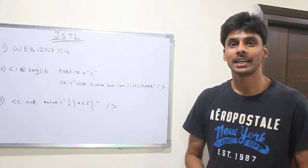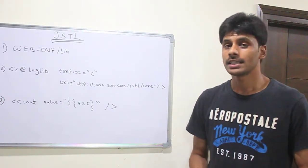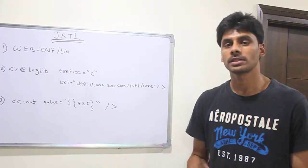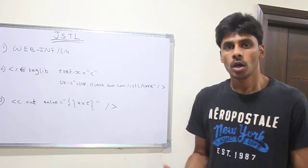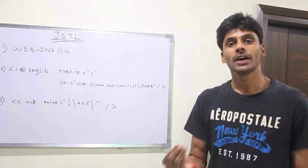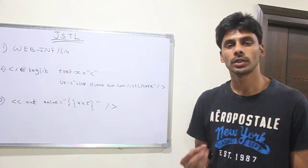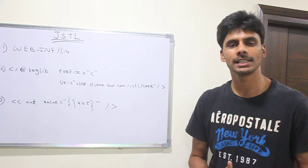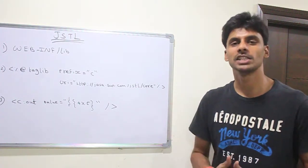JSTL stands for Java Standard Tag Library. It is a collection of tags from Sun Microsystems or Oracle which will allow us to move the Java code out of a JSP page so that it will be easy even for an HTML designer to look at our page or make changes to our page.